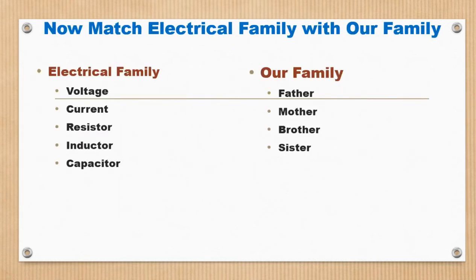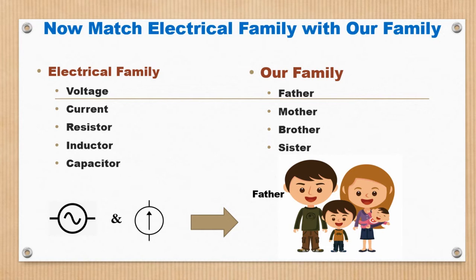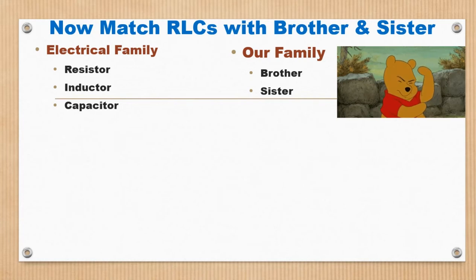When we come to map the electrical family with our own family, initially we consider voltage and current. Since voltage and current sources are feeding the RLCs, just as our parents feed our brothers and sisters, I would like to map voltage and current sources to parents — father and mother. When we go on to RLC mapping, it's very interesting and very important.